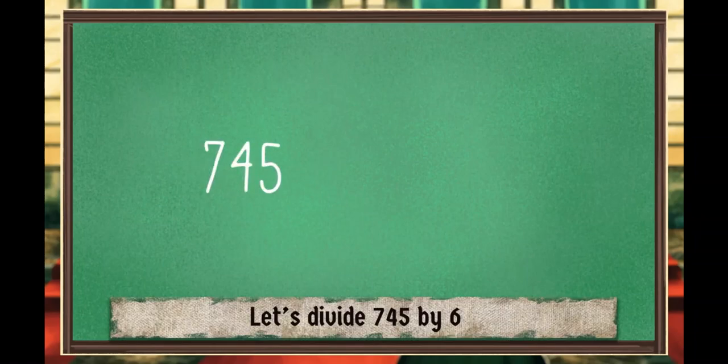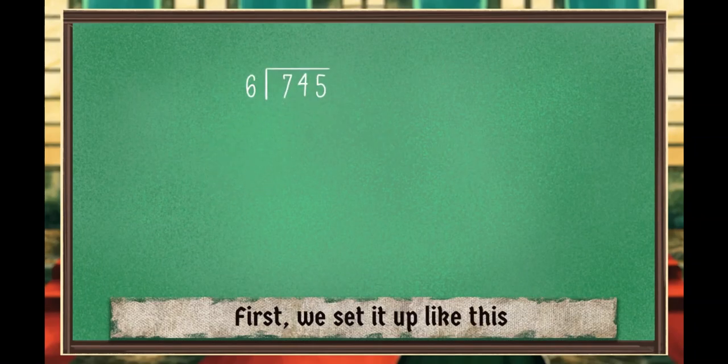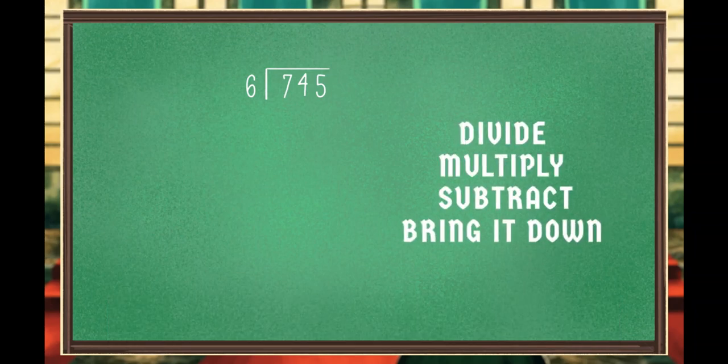Let's divide 745 by 6. First, we set it up like this. Then, follow the steps for one digit now. Divide, multiply, subtract, and bring it down.